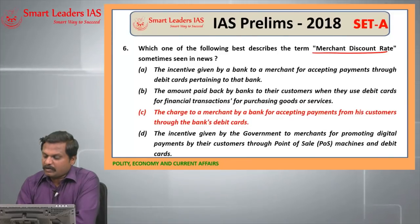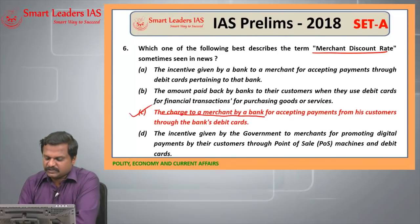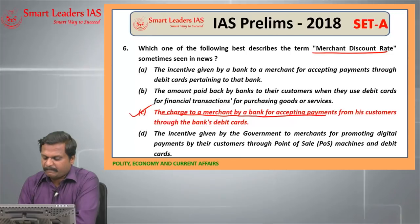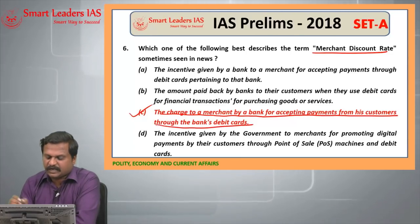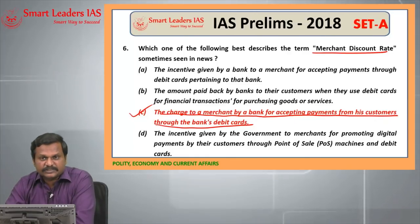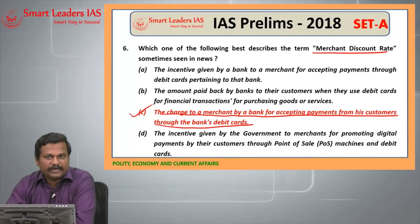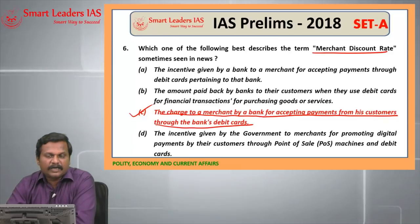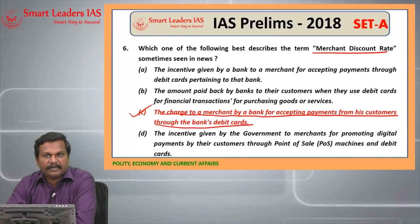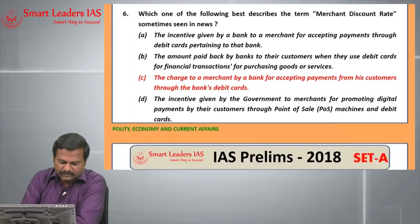Sixth question is on Merchant Discount Rate. The answer is: the charge to a merchant by a bank for accepting payment from customers through the bank's debit cards. This charge will be split amongst three parties — one who lends the POS terminal, the bank which has issued the debit card, and the one who provided the payment gateway. So C is the right answer for the sixth question.